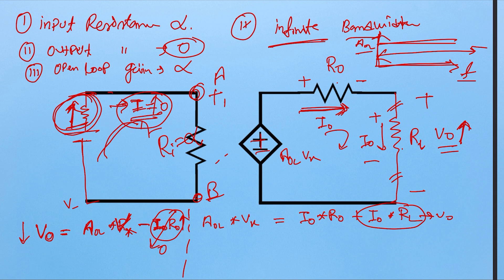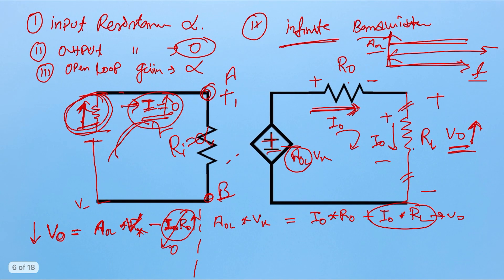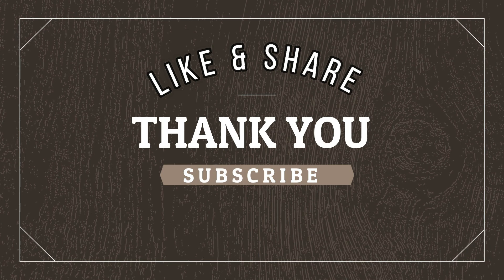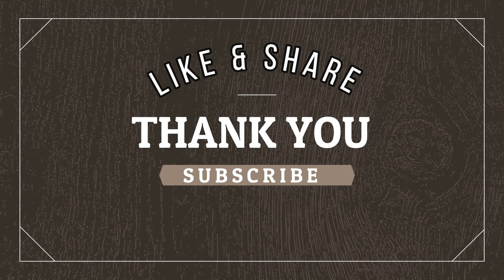So this covers the very basics of the op amp — its properties, symbol, and the IC. In my next video I will explain what is virtual short or virtual ground, what is the open-loop gain, and I will calculate those values. That's all from this video. Thanks for joining, and please share this concept with your friends and like and subscribe to my YouTube channel.